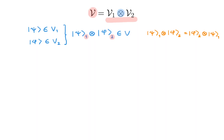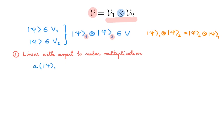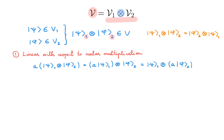With this notation, we say that V is a tensor product space if it obeys the following properties. The first is that the tensor product of two vectors needs to be linear with respect to scalar multiplication. What this means is that a times the tensor product of |ψ⟩ with |φ⟩ is equal to the tensor product of a|ψ⟩ with |φ⟩, which is also equal to the tensor product of |ψ⟩ with a|φ⟩, where a is a scalar.